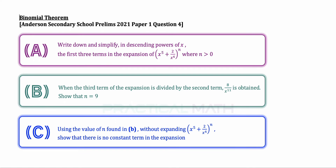In the final part of the same question, using the value of n found in part B, and without expanding the binomial expansion, show that there is no constant term in this expansion. You might want to pause this video to give this question a try, and when you are ready, keep watching.